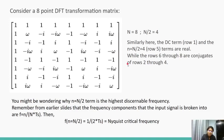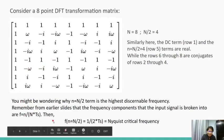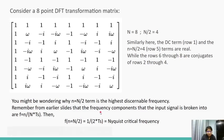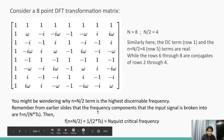You might be wondering why small n equals N by 2 term is the highest discernible frequency. Remember from earlier slides that the frequency components that the input signal is broken into are f equals this equation. Then, for the small n equals N by 2 term, the frequency is 1 over 2 times Ts, which is the Nyquist critical frequency, above which it is impossible for us to practically measure the frequencies.